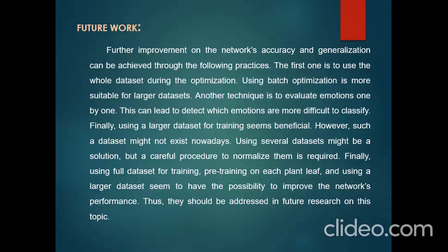For future work, further improvement in the network's accuracy and generalization can be achieved through the following practices: using batch optimization, which is more suitable for larger datasets; evaluating models one by one to determine which are more difficult to classify. Using a larger dataset for training seems beneficial; however, such a dataset might not exist currently, so using several datasets might be a solution, requiring careful normalization. Pre-training on each plant leaf and using larger datasets should be addressed in future research.